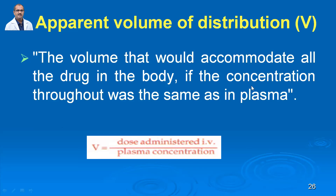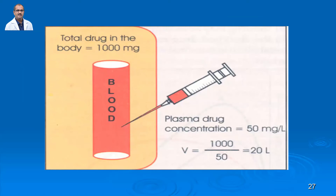The formula is: V = dose administered IV / plasma concentration. Because for IV administration, absorption is 100%. For example, if the dose of thiopentone sodium is 9 mg/kg and plasma concentration is 1 mg/dL, the volume of distribution is 9.